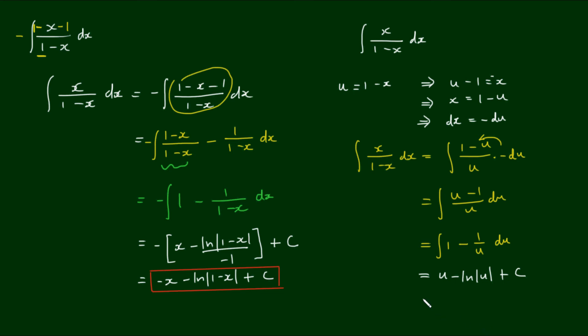And we can now back substitute what we had before. So u was equal to 1 minus x minus log of 1 minus x plus the integration constant c.